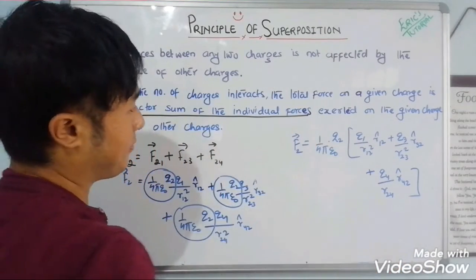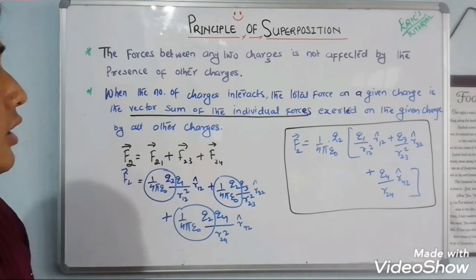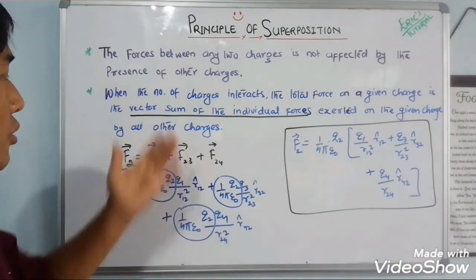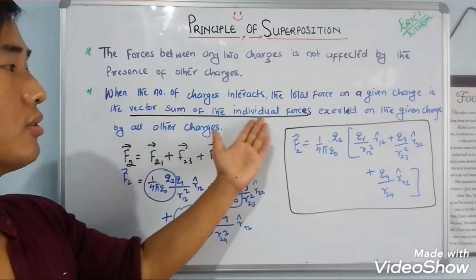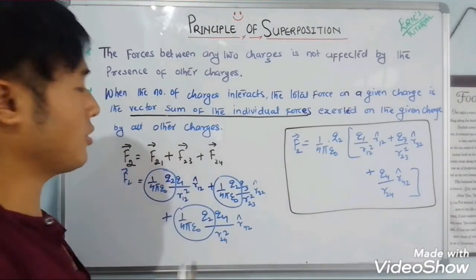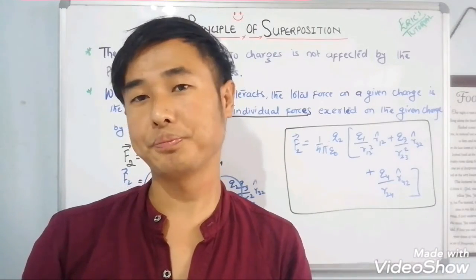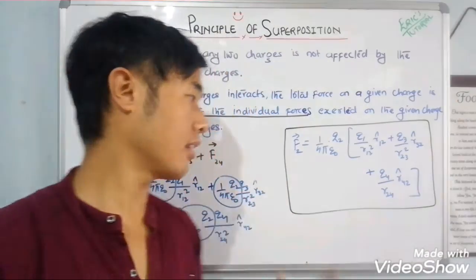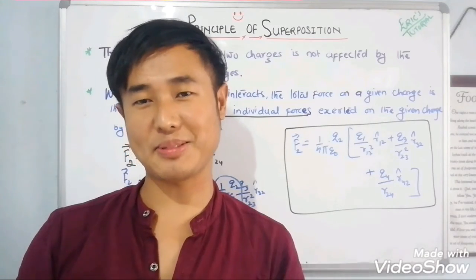This is the Principle of Superposition. Two key points: first, forces between any two charges are not affected by the presence of other charges. Second, the total force on a given charge is simply the vector sum of the individual forces exerted by all other charges. I hope you all understood. Thank you so much — see you in the next video. Please comment if you didn't understand, and don't forget to like, share, and subscribe.